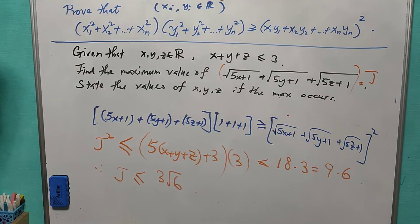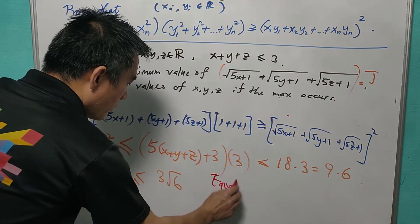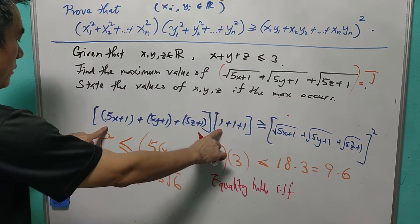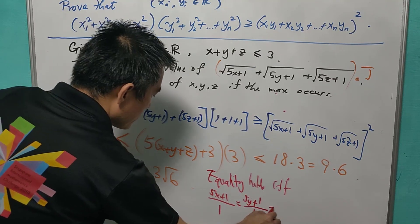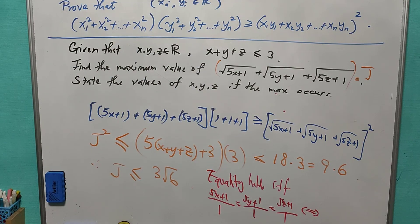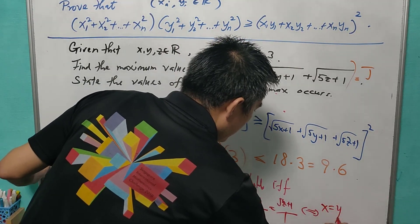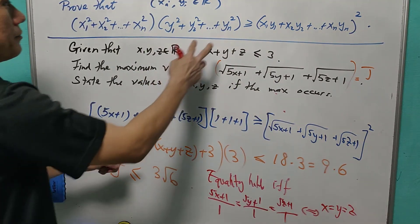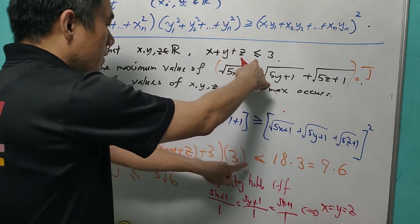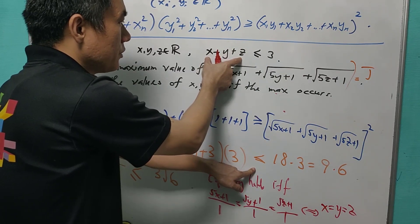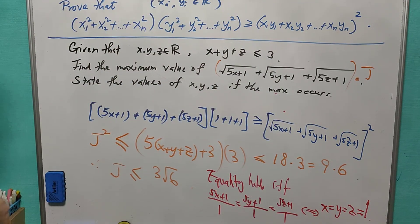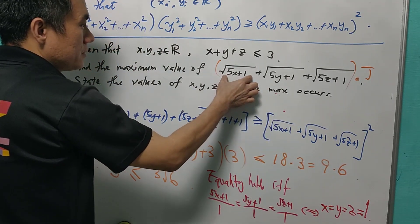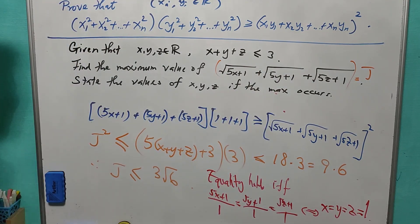Equality holds if and only if the corresponding ratios are the same: (5x+1)/1 = (5y+1)/1 = (5z+1)/1, which means x = y = z. Since x+y+z = 3 and each is equal, each must equal 1. Indeed, when x = y = z = 1, each term equals √6, and the sum equals 3√6. So when the maximum occurs, x = y = z = 1.